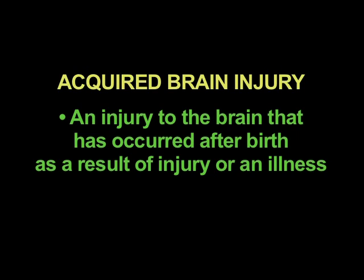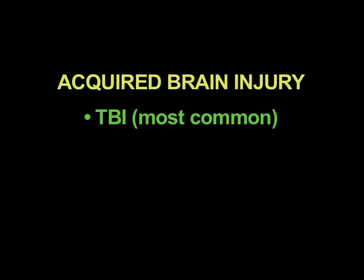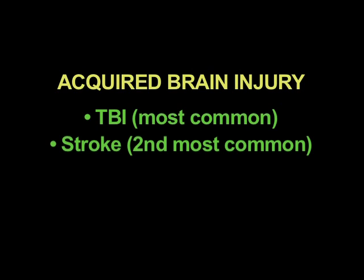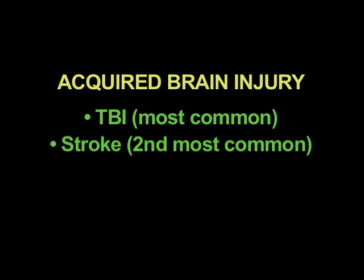Fetal alcohol syndrome is also a type of disorder that is either present at birth or occurs during the development of the fetus. An acquired brain injury is a brain injury that has occurred after birth and is usually the result of an injury or an illness. Examples include traumatic brain injury, which is the most common form, and strokes, which is the second most common form. Anoxia — a shortage of oxygen to the brain — is frequently seen when people have heart attacks.